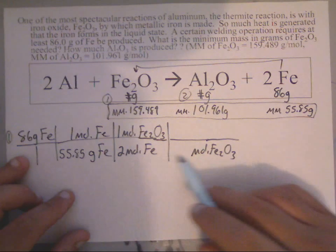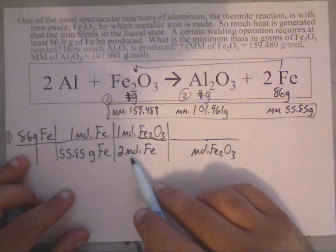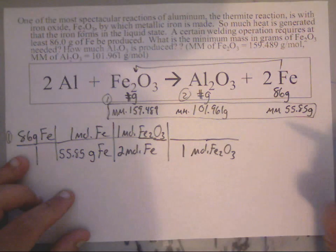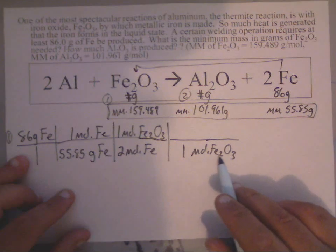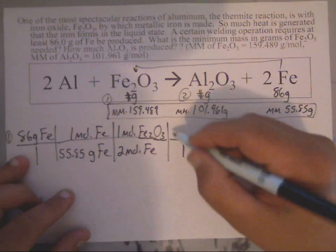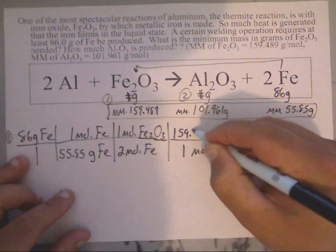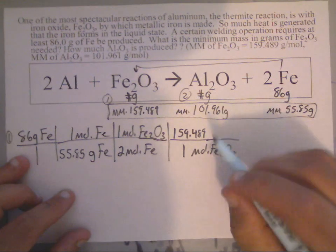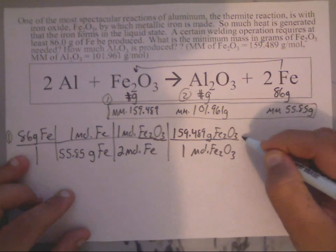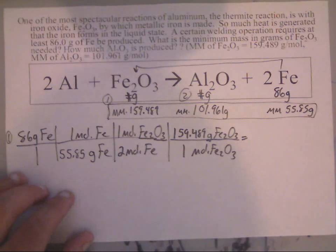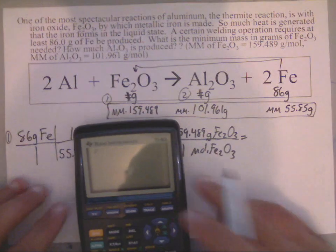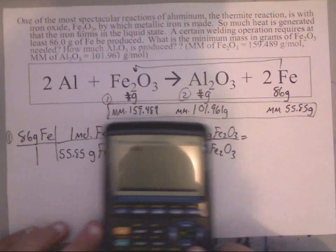Down here this would be moles of Fe2O3. Remember, any times past the second, third time of writing moles, you will always write a one. So I will write one mole of Fe2O3. The molar mass of Fe2O3 is right there: 159.489 grams of Fe2O3. After that, you just use a little handy-dandy calculator.